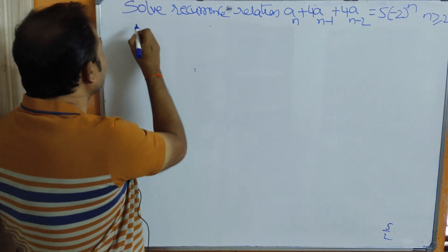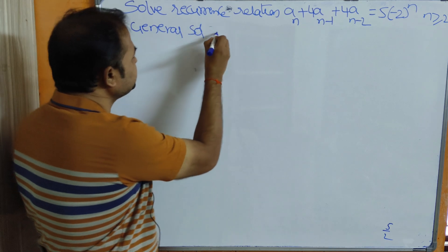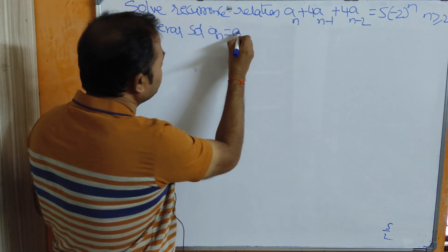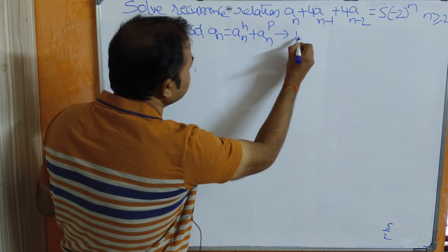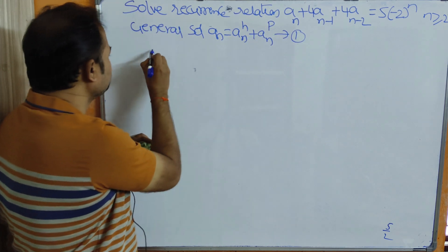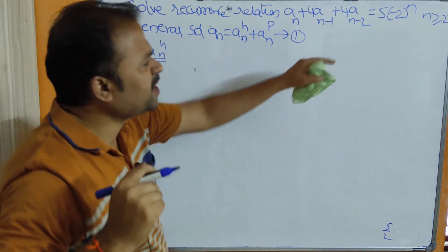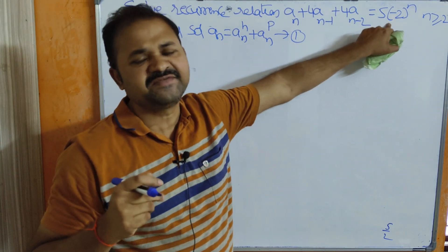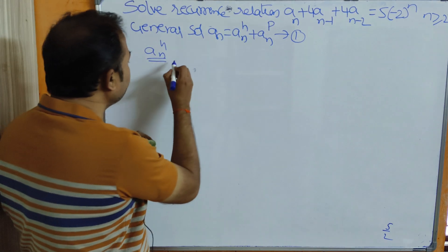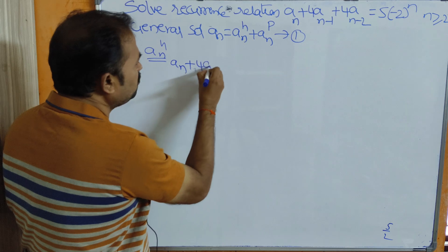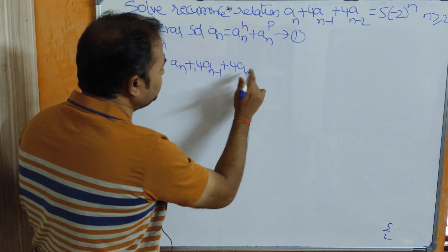We know the general solution for the non-homogeneous recurrence relation: aₙ = aₙʰ + aₙᵖ, where h is the homogeneous part and p is the particular solution. First, let us find aₙʰ. For the homogeneous part, the right-hand side must equal 0, so we substitute 0: aₙ + 4aₙ₋₁ + 4aₙ₋₂ = 0.